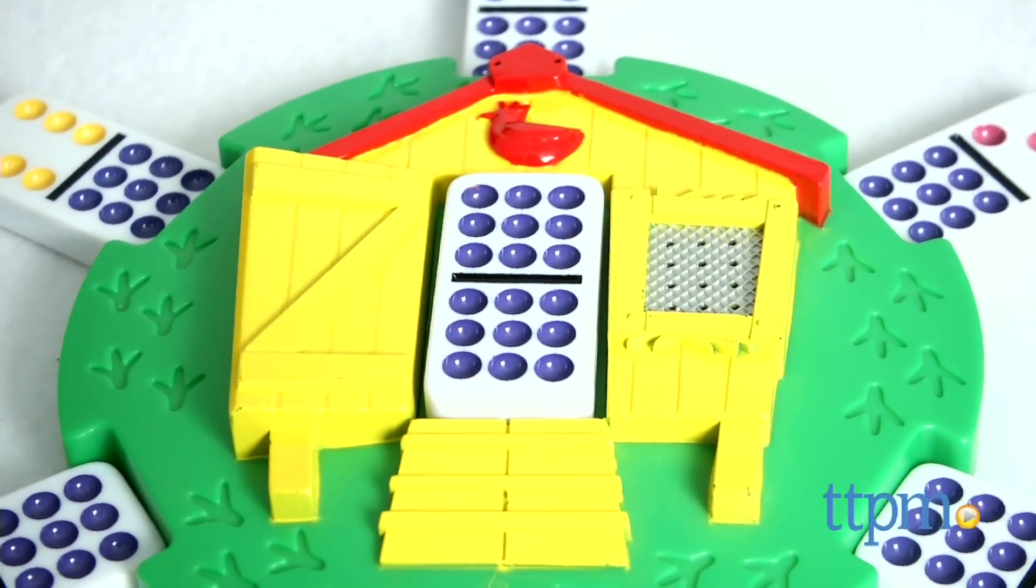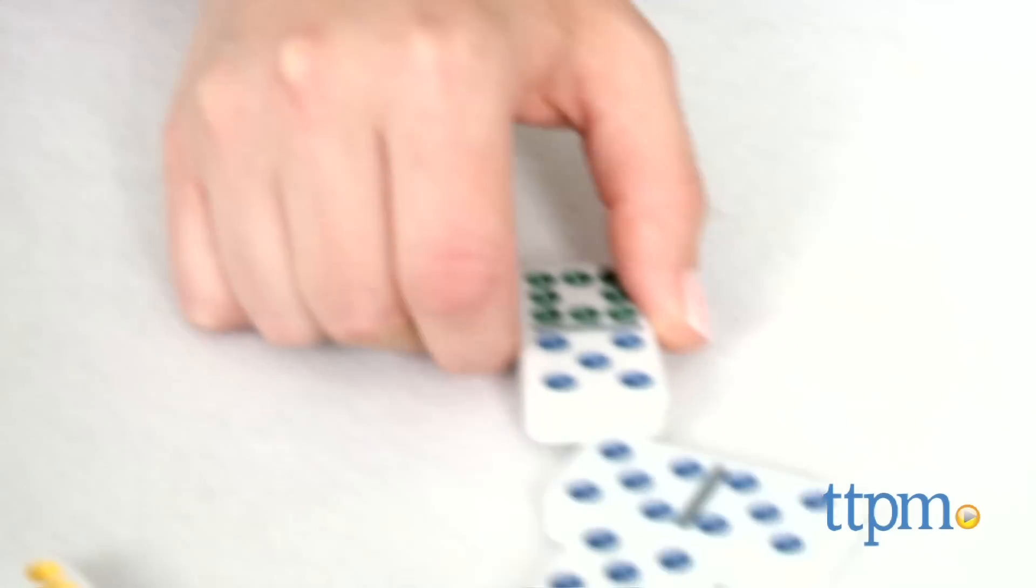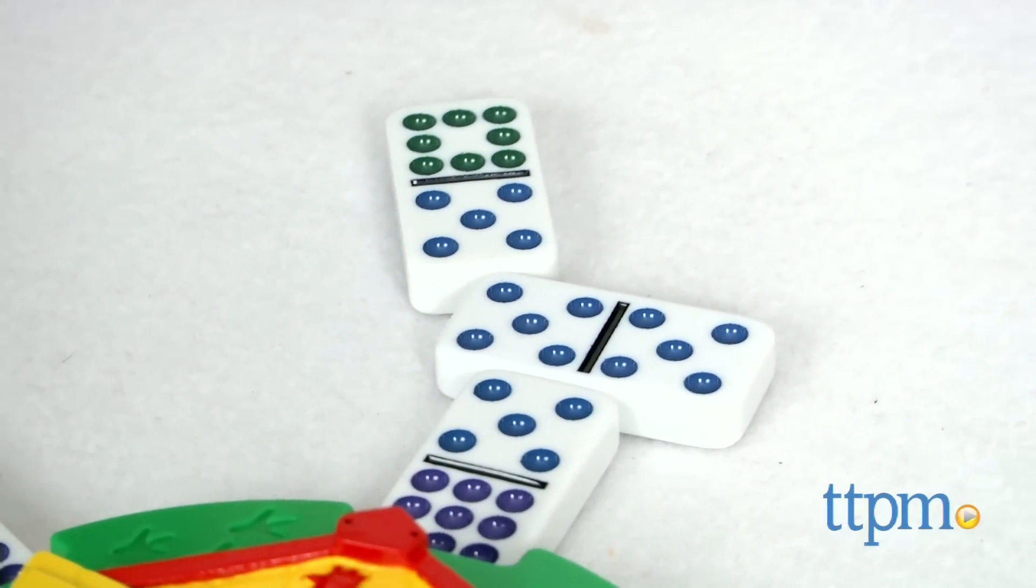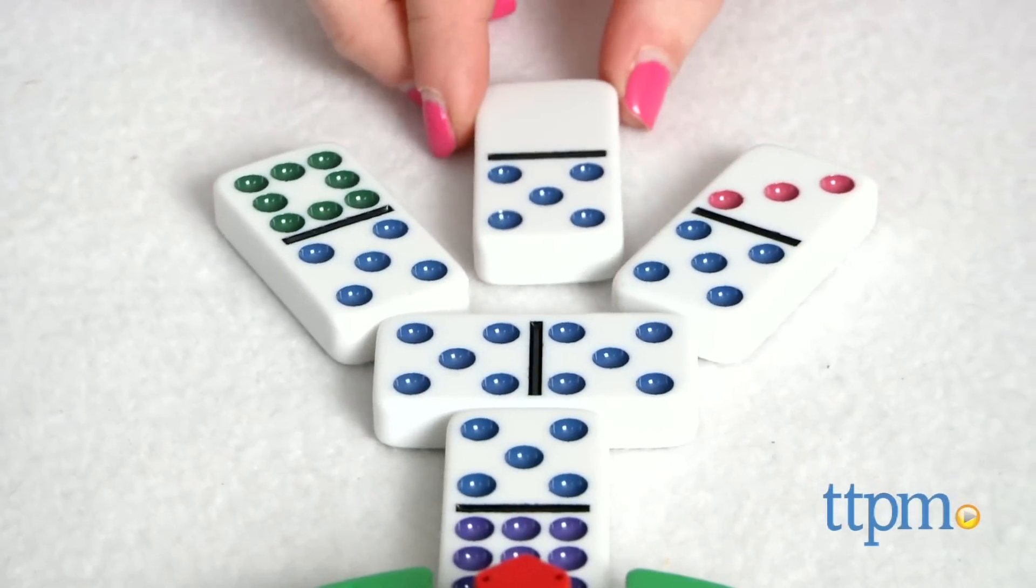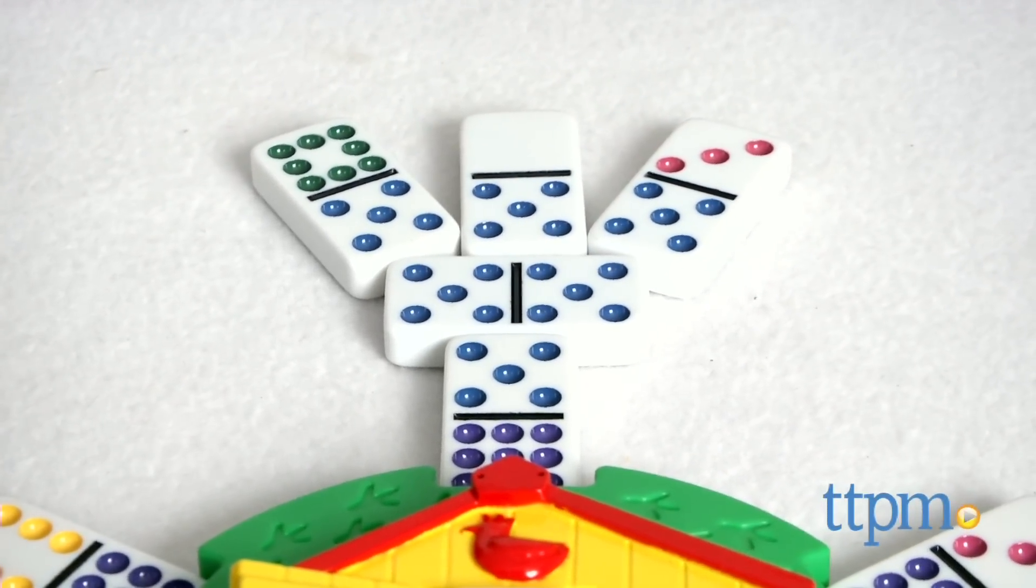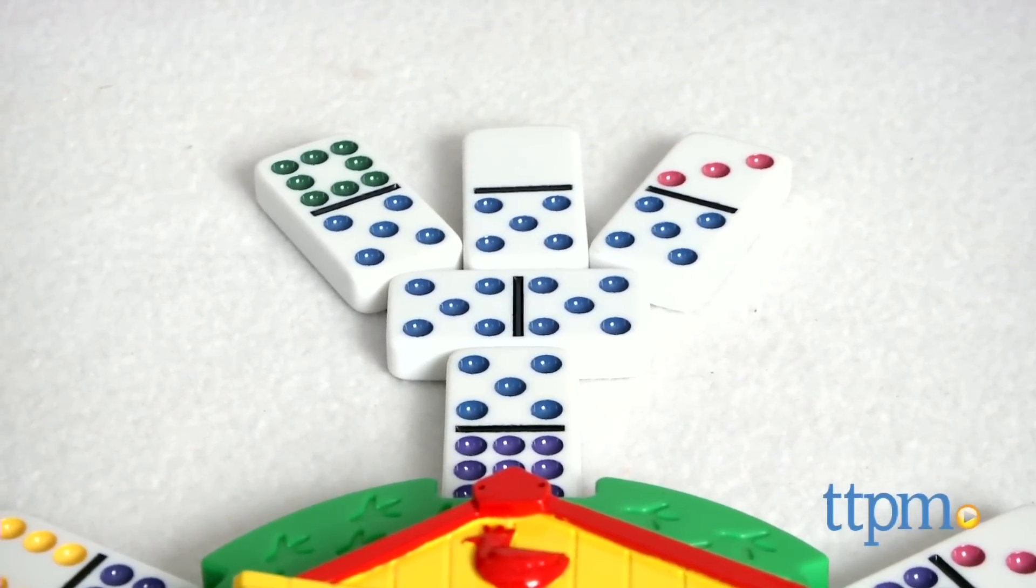This signals to the other players that the next three dominoes must be played on the double-domino to form three chicken toes. Once three toes are complete, play resumes and dominoes can be played on any of the chicken legs or the chicken toes.